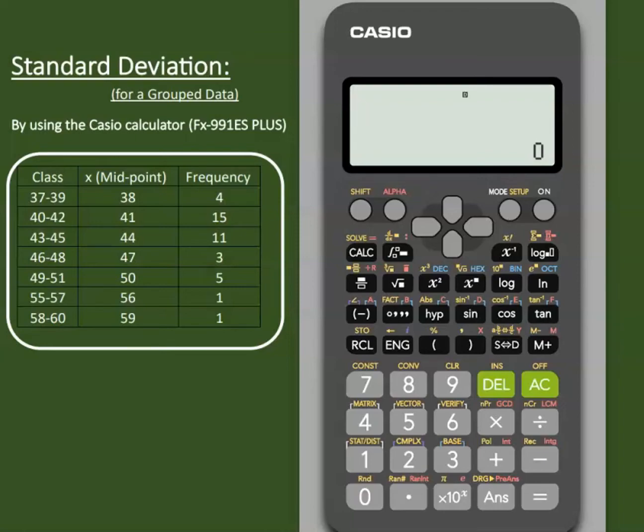Hello everyone, we are going to calculate standard deviation for grouped data with the Fx-991ES PLUS second edition Casio calculator.